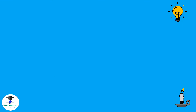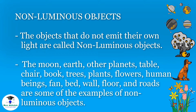Non-luminous objects. The objects that do not emit their own light are called non-luminous objects. The moon, earth, other planets, table, chair, book, trees, plants, flowers, human beings, fan, bed, wall, floor and roads are some examples of non-luminous objects.